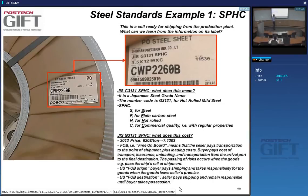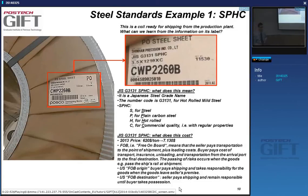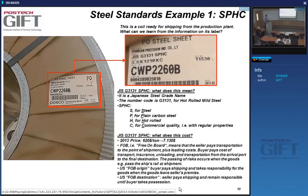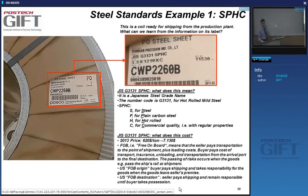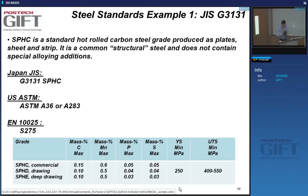You also have FOB destination, meaning the seller pays everything until the buyer takes possession. Coils sometimes fall off trucks, trains, or cranes — so you need to know who's responsible. FOB can mean very different things, and things are not finished when the product is finished — they have to get to the client.